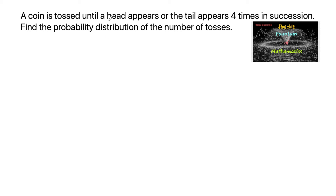A coin is tossed until a head appears or a tail appears four times in succession. We need to find the probability of the number of tosses. Here the number of tosses is a random variable, and the experiment is a coin is tossed until a head appears.